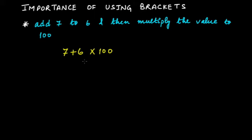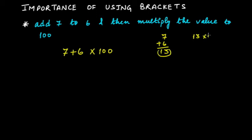The correct way would be that you first add 7 and 6 to get 13, and then multiply that value by 100. The obtained value is 13, and you multiply it by 100. The answer you would get is 1300. This would be the correct way.